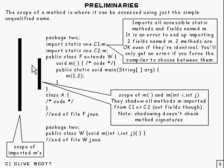Now, you'll notice that the scope of these M there and the one in W lies within the scope of the imported M's. And the effect of that is to what's called shadow any imported method M.